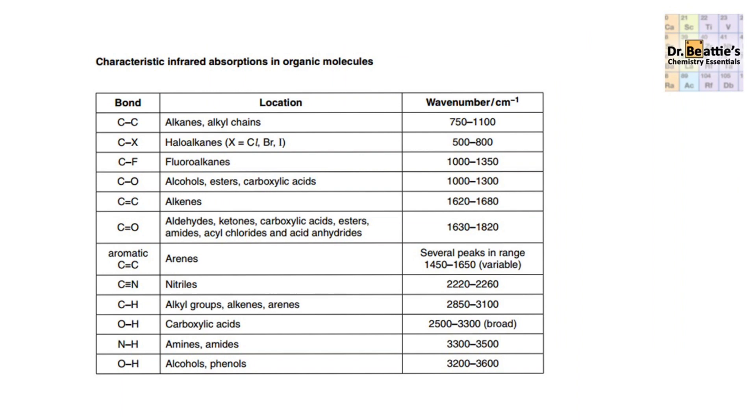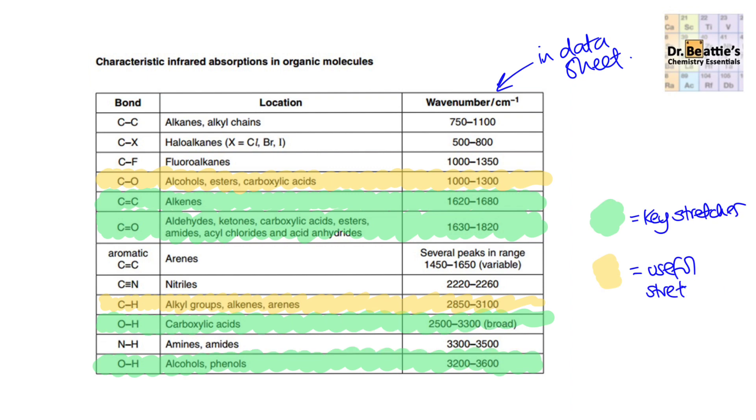We ignore this region from 1,500 to about 500 in terms of wavenumber. Our focus is on this area where we can distinctly pull out different stretches in the spectra and assign them for certain functional groups. In the exam, you don't need to remember the different areas. You're given a table like this found on your datasheet. The table given is actually a bit too complicated for A-level, so we need to focus on key bond stretches and wave numbers. The green stretches here are the key stretches you'll be using from the datasheet.